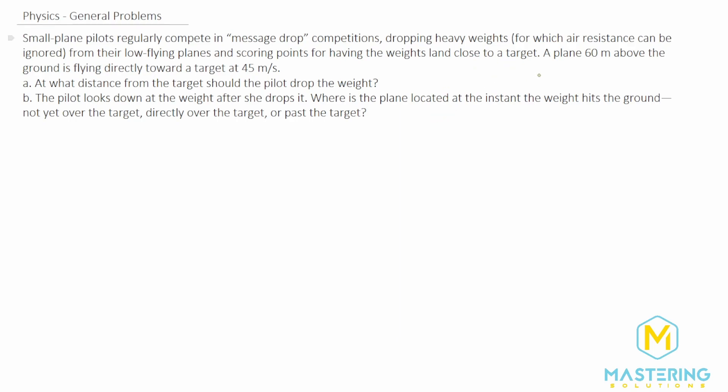In this instance, we have a plane that's 60 meters above the ground and it's flying directly towards this target at 45 meters per second. We need to find how far away from the target the pilot should drop the weight and then we need to figure out that after she drops it when it hits the ground where will the plane be—directly over the target or past the target or not yet over the target.